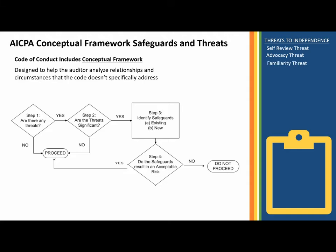Similar to that is the familiarity threat, where you're so familiar with the client that you trust them and lose your professional skepticism, just accepting what you're given. Then there's the self-interest threat — if you have some potential monetary interest in the success of that client. For example, the client could say, 'If this audit comes out good, I'll give you a job as CFO.' That would be a self-interest threat, ruining your independence and objectivity.